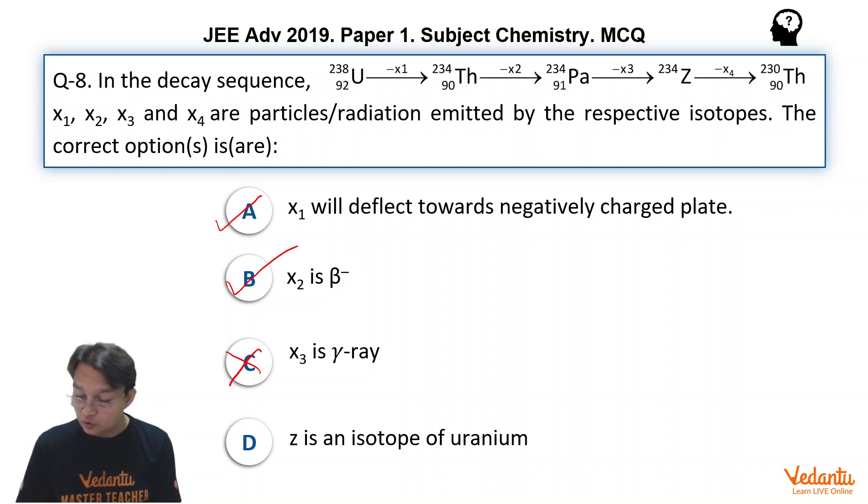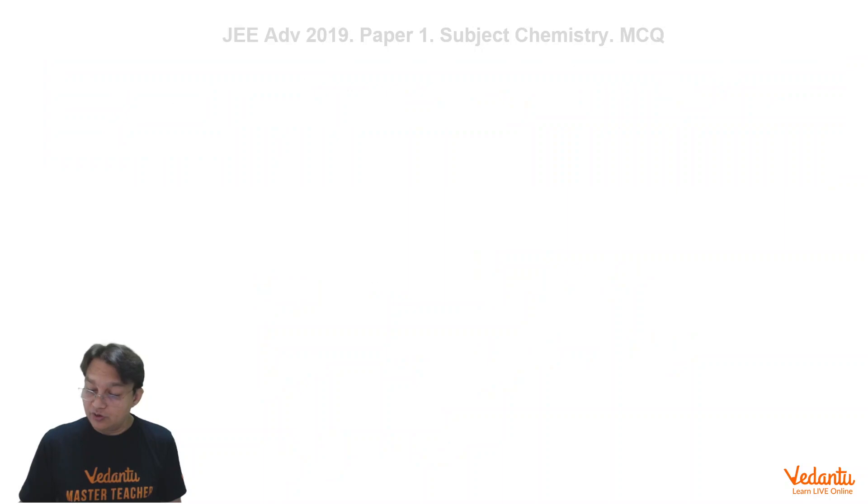And Z is an isotope of uranium. Yeah, of course, we have seen that. That is 92. So of course, Z is an isotope of uranium with smaller mass. So this question is quite an easy question and quite a bonus to you, all of you.